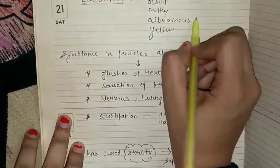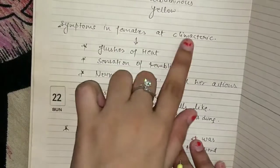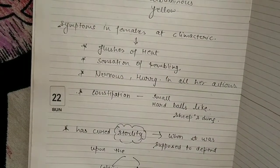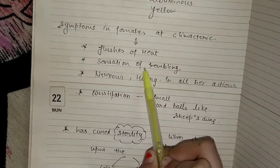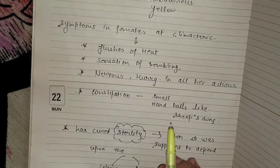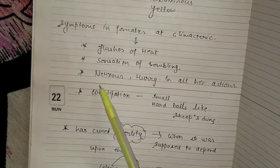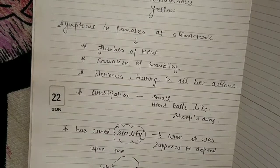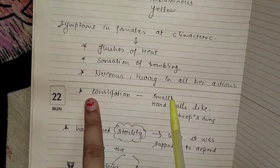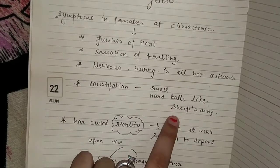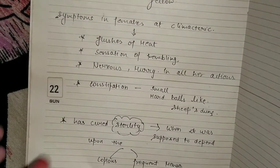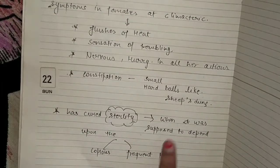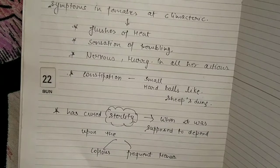Symptoms in females at the climacteric: flushes of heat, sensation of trembling — trembling is a very important striking feature — nervous hurry in all her actions, hurriedness, exhaustion, and excitability. These are the constant factors of Sulfuric Acid, as mentioned at the beginning of the video. Constipation: small hard balls like sheep's dung.